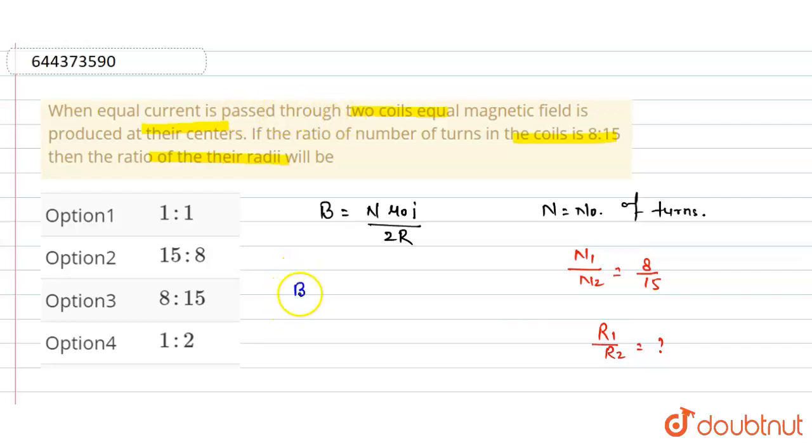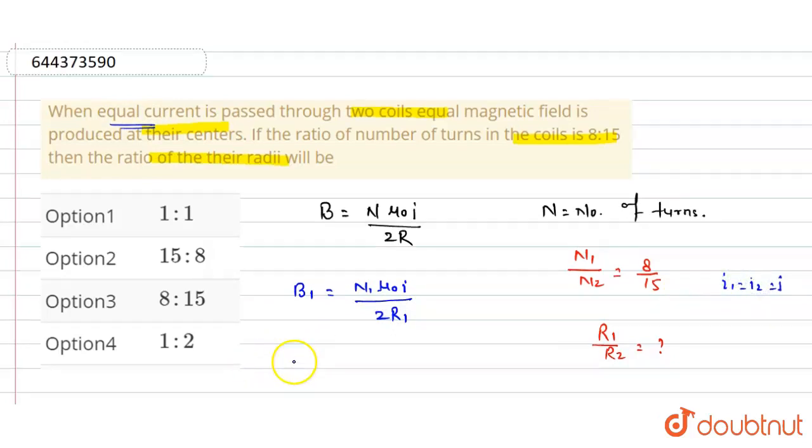So for the first coil, B1 equals N1 mu naught I divided by 2R1. According to the question, I1 and I2 are equal to I. Similarly, for the second coil, B2 equals N2 mu naught I divided by 2R2. The magnetic field is the same for both coils.